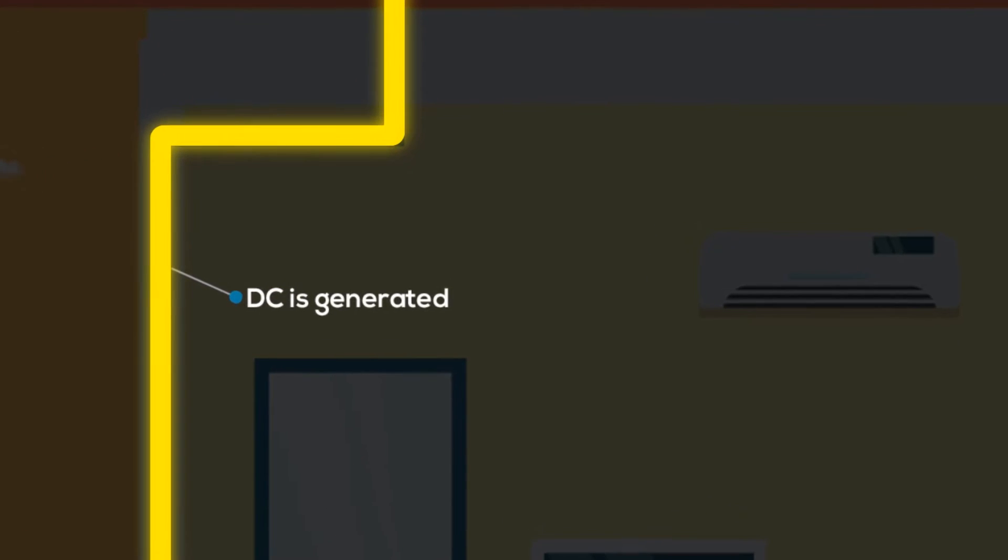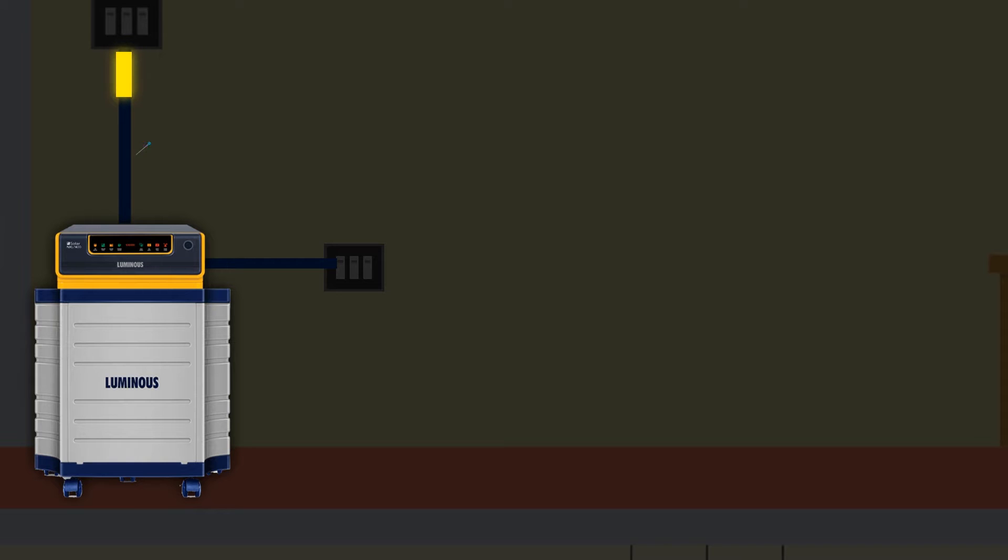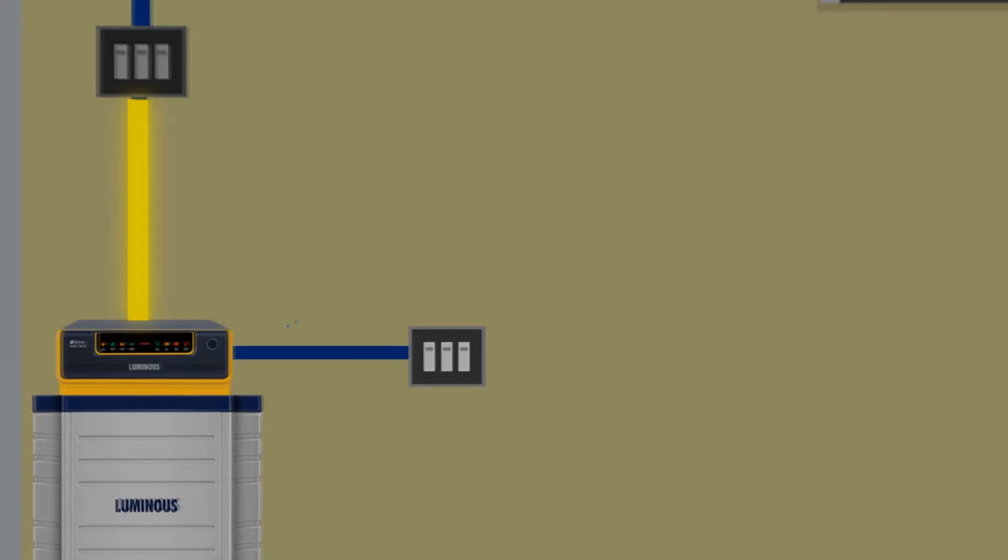The energy produced by your solar panels isn't useful on its own. When your solar panels collect sunlight and turn it into DC energy, it gets sent to the inverter.